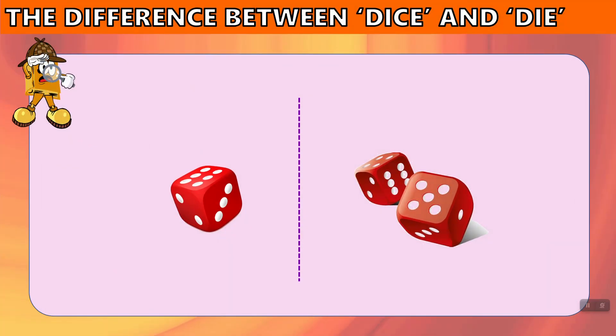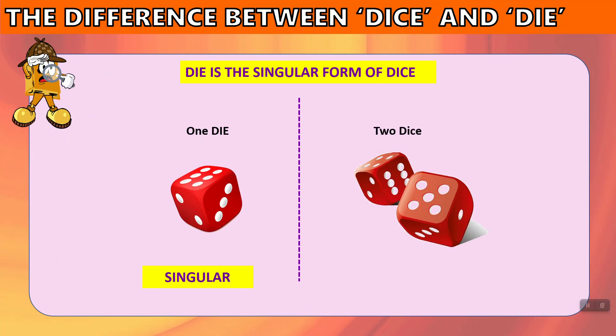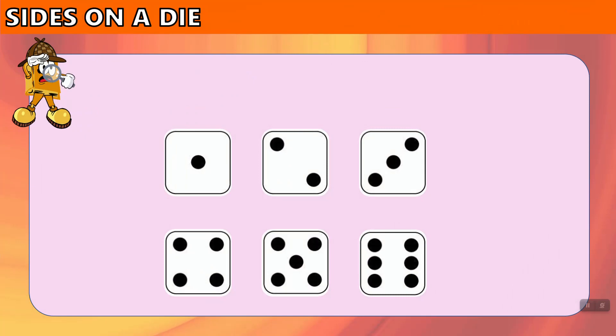Let's look first at dice. Die is the singular form of dice. Sometimes we say one dice, but it's one die, two dice. Die is the singular and dice is the plural. Let's look at the faces of a die.